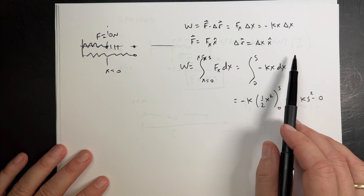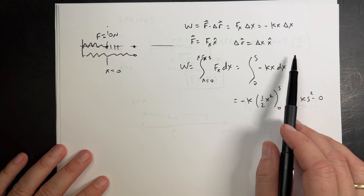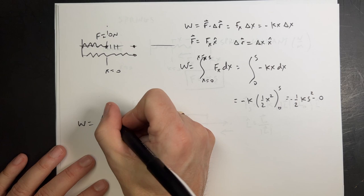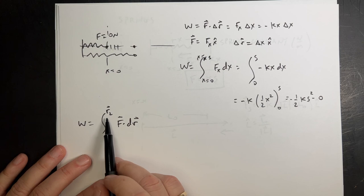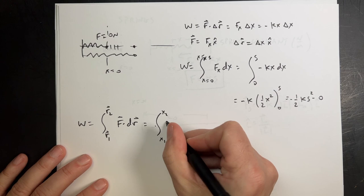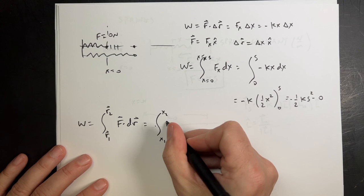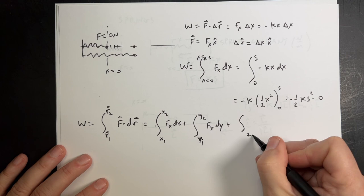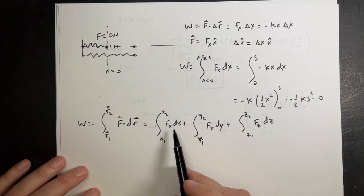This is the work done by a variable force — it works for any non-constant force. In general, work equals the integral from r1 to r2 of F dot dr, which breaks into the integral of Fx dx plus the integral of Fy dy plus the integral of Fz dz. You need to know how the force function changes in the x, y, and z directions.